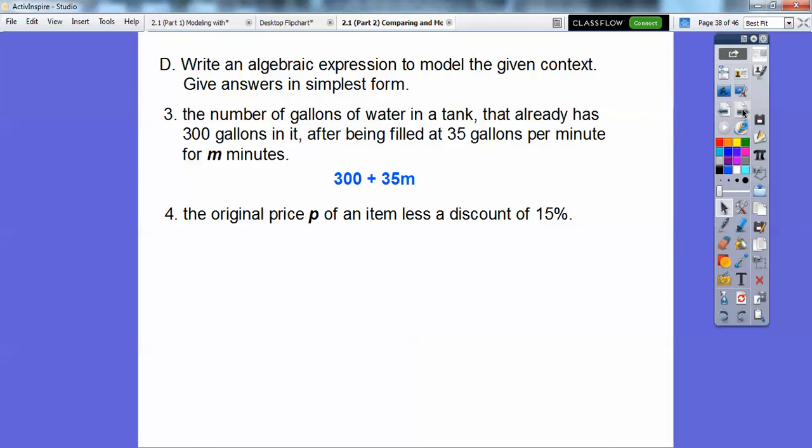Here's another one. The original price P of an item, less a discount of 15%. Well, what do you think less a discount means? That means subtraction. So if we just do P minus 15%, so P minus 0.15P, this is 1P minus 0.15 is going to get us 0.85P. Think about it. If you're taking 15% off an item, you have 85% of it left. And that's what this says.